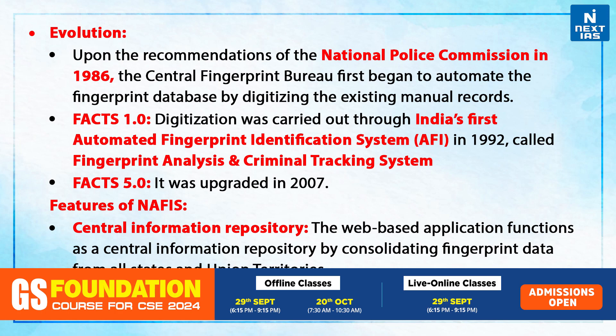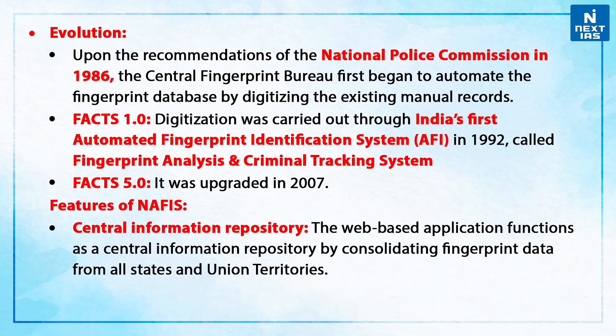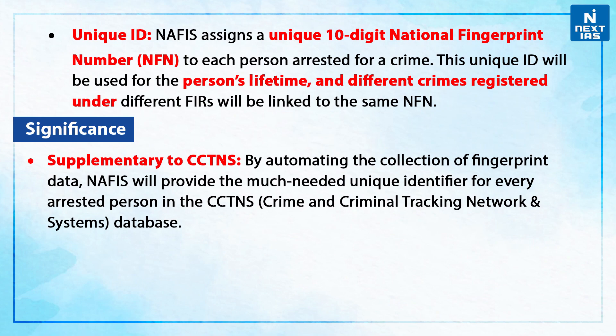If we talk about the features of NAFIS, it is a central information repository. The web-based application functions as a central information repository by consolidating fingerprint data from all states and union territories. It also assigns a unique 10-digit National Fingerprint Number to each person arrested for a crime. This unique ID will be used for the person's lifetime, and different crimes registered under different FIRs will be linked to the same NFN, i.e. the National Fingerprint Number.